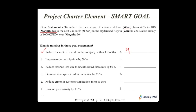'Reduce revenue loss due to unauthorized discounts by 80 percent' — the what and magnitude are present, but the timeline is missing and the impact is missing. 'Decrease time spent in admin activities by 25 percent' — it is specific and measurable at 25 percent, achievable it seems, relevant depends on context, but it is not time-bound — when is missing — and the magnitude of impact is also missing.